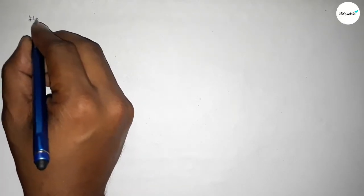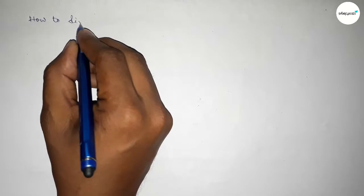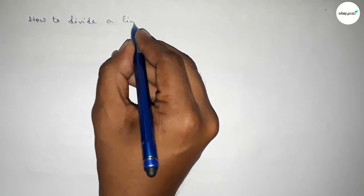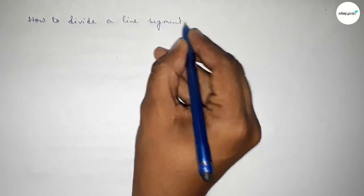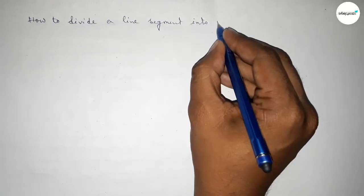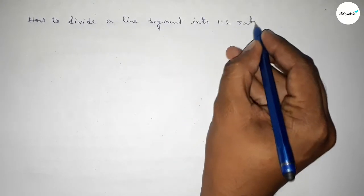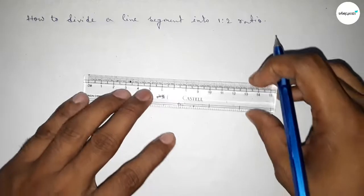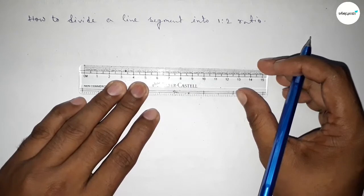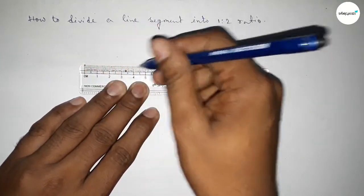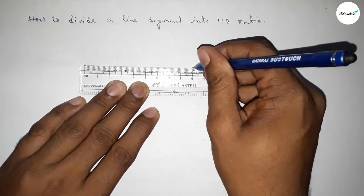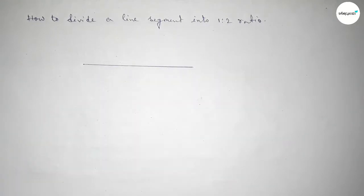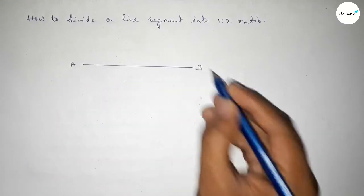Hi everyone, welcome to Essay Share Classes. Today in this video we have to divide a line segment into 1:2 ratio by using compass in an easy way. So let's start the video. First of all, taking here a line of length 9 centimeter—you can take any length. Taking here point A and here B.